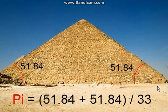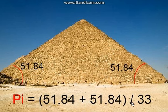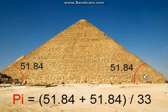But we must do this: we must put plus here, we must sum these two angles, and we must divide that with the special number 33. So the special number 33 is connected to the Giza pyramid and is connected with the number pi.